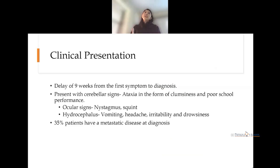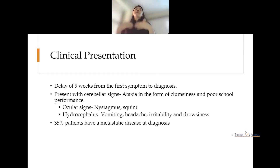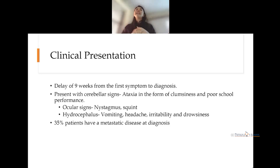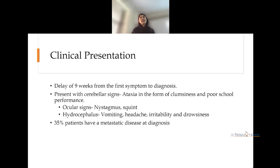Clinically, there is a delay of almost nine weeks from the first symptom to diagnosis. Children present with cerebellar signs like ataxia — in babies seen as clumsiness and poor school performance — along with ocular signs like nystagmus and squint. They present to the neuro OPD with hydrocephalus, early morning vomiting, headache, irritability, and drowsiness. Thirty-five percent of patients sadly present with metastatic disease at diagnosis.